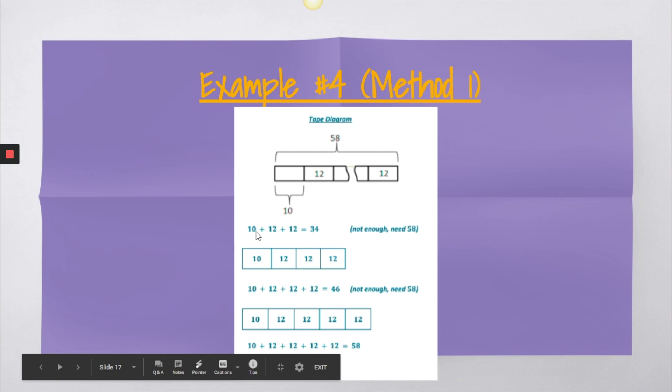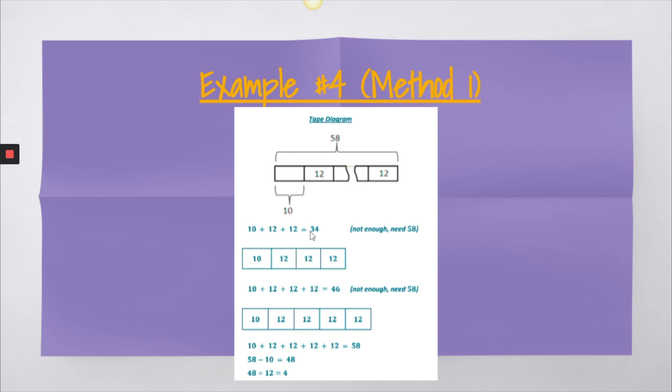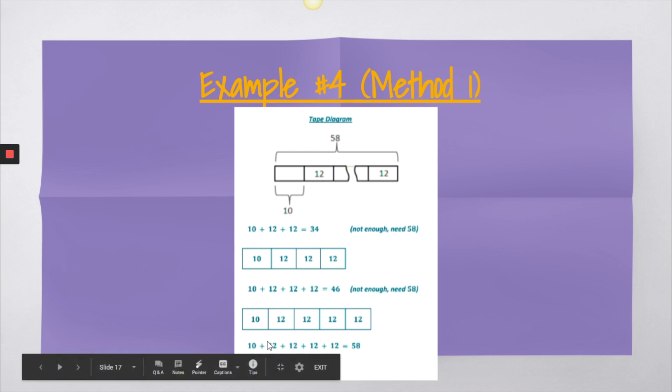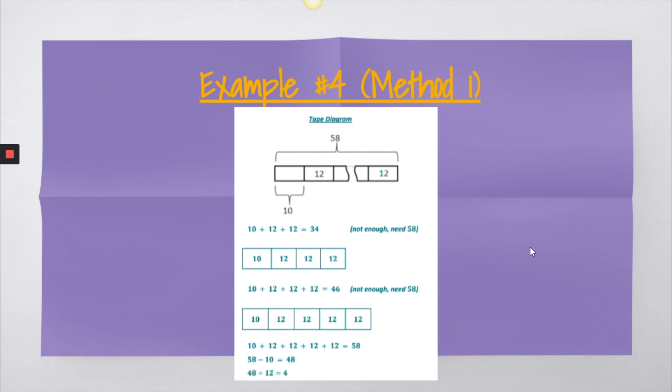So what they did is they said, well, this is their guess and check. We got 10 plus 12 plus 12. Well, 10, 12, and 12 give me 24 plus the 10, 34. That's not enough. We know that we need 58 because 58 is what's listed above. So, 2 didn't work. So let's try 3. When we add that up, it equals 46. That's still not enough. So then we're going to try the last one. And when I add up 4 of the 12s, that gives me 48 plus another 10 gives me 58. So that's my solution.